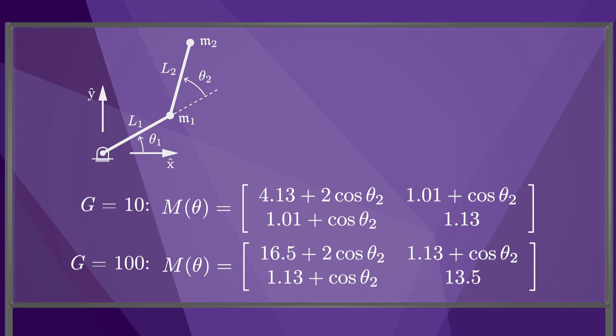As the gear ratios become large, the apparent inertias of the rotors dominate the dynamics, and the coupled dynamics of the robot become closer and closer to the dynamics of N independent joints.